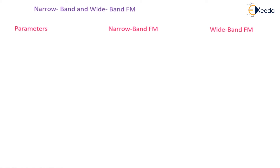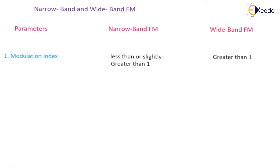The first parameter is the modulation index. For Narrowband FM, the modulation index is less than or slightly greater than 1, whereas Wideband FM has a larger value of the modulation index — it is always greater than 1.